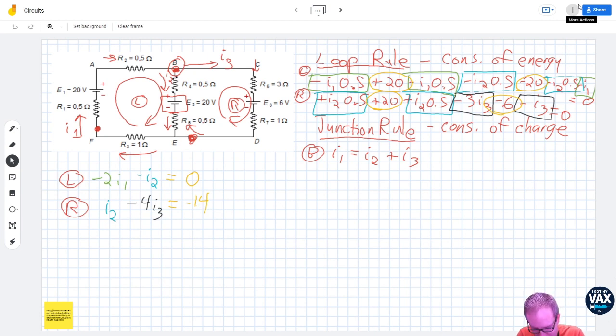And then the last bit, the junction here. For this to become a linear algebra problem, I want to put all of the unknown variables on one side, and I want to put all the known constants on the other side. So let's have I1 minus an I2 minus an I3 equals zero.